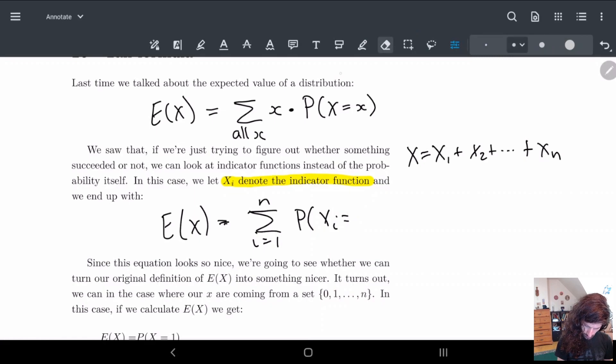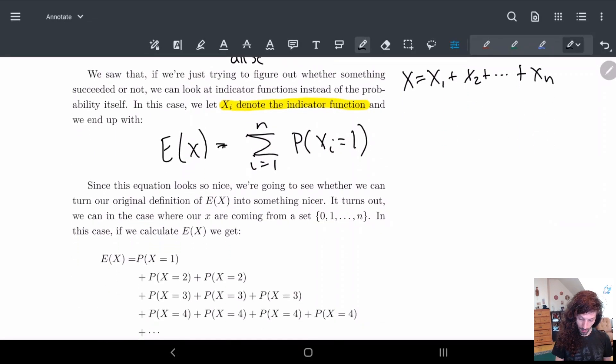This little x becomes one, so that's why it's just one times everything. We just sum up all the probabilities. Since this equation looks nice, we're gonna take this and go a little further with it.